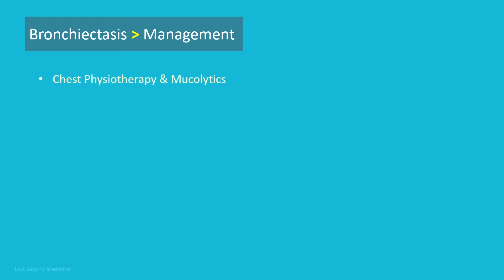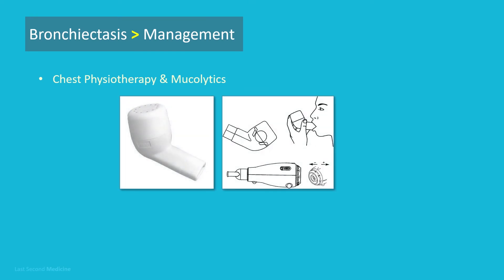Chest physiotherapy and devices such as the flutter valve may aid sputum expectoration and mucus drainage. Patients should be shown how to perform regular daily physiotherapy to assist drainage of excess bronchial secretions. This is of great value in reducing the amount of cough and sputum and in preventing recurrent episodes of bronchopulmonary infection. For postural drainage, the patient should lie with the lobe to be drained uppermost; deep breathing followed by forced expiratory maneuvers helps move secretions towards the trachea. Devices that increase airway pressure — either by a constant amount (e.g., positive expiratory pressure mask) or in an oscillatory manner (e.g., flutter valves) — aid sputum clearance. The optimum duration is at least 5 to 10 minutes twice daily.